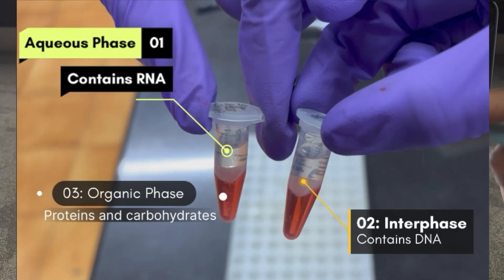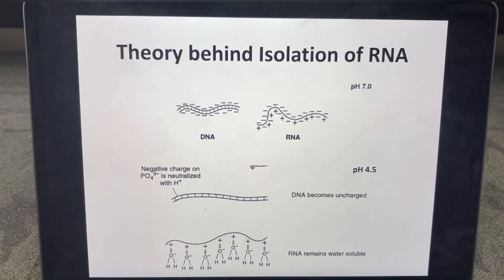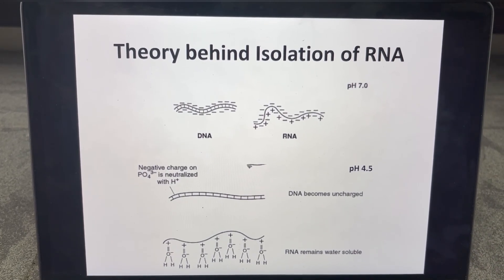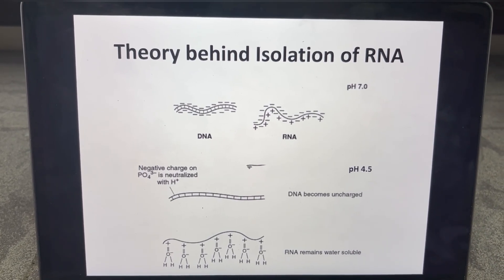That is why we will be getting three different distinct layers when we add Trizol. The first is aqueous layer where RNA will dissolve, the second layer will be interface where DNA is present, and the third phase is the proteins where they get precipitated. I hope you have understood the principle behind RNA isolation.